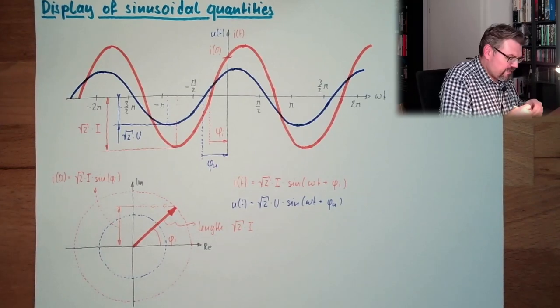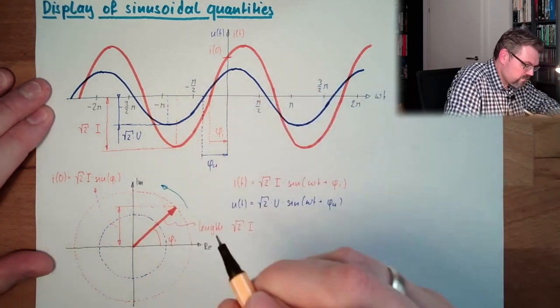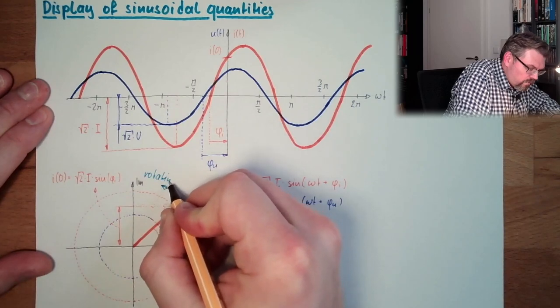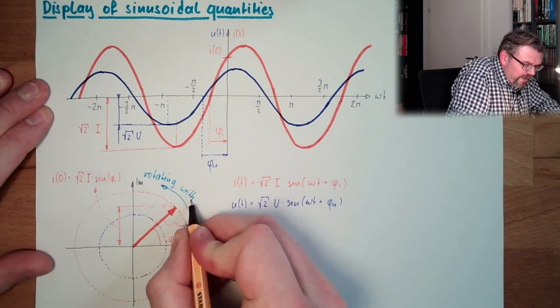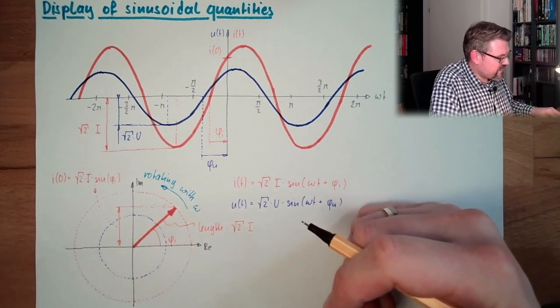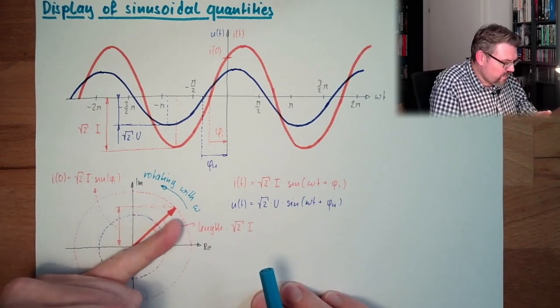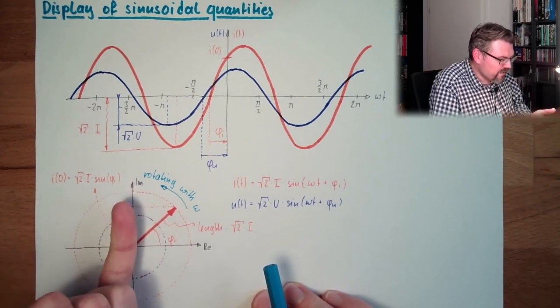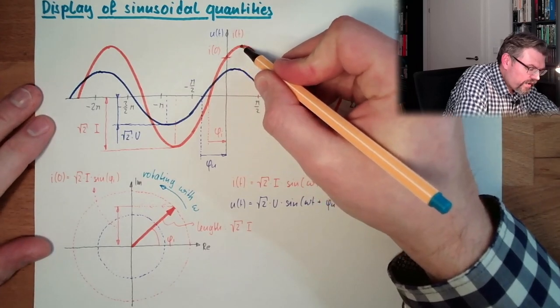And now I imagine the following. I imagine this arrow is rotating in this direction with the angular velocity omega. And now let's have a look what is happening to this projection. If we go up here, we'll grow until we are here. Then we have the full. Then we are here. So we go up, grow, and then we are here.